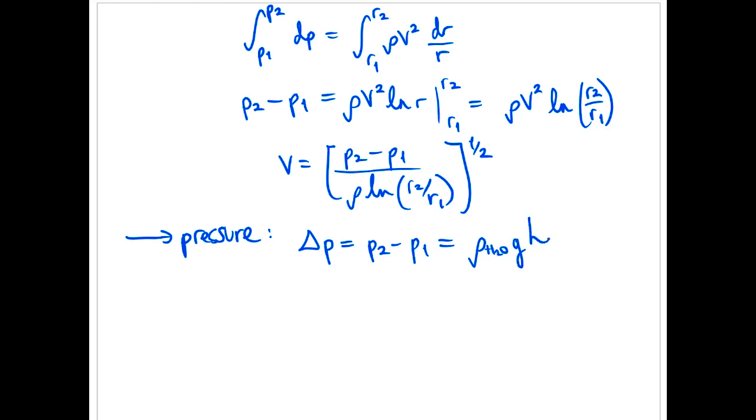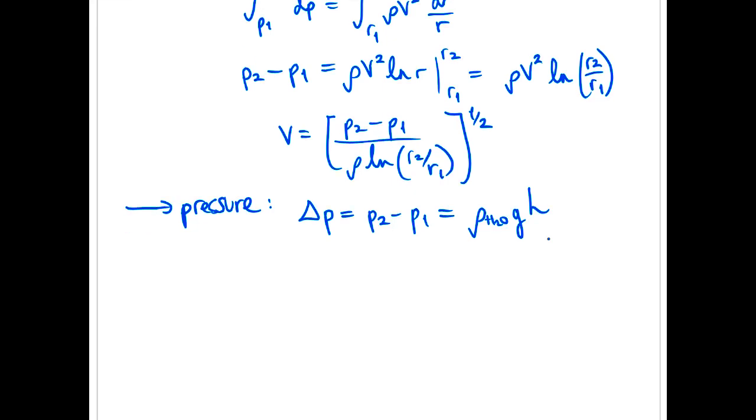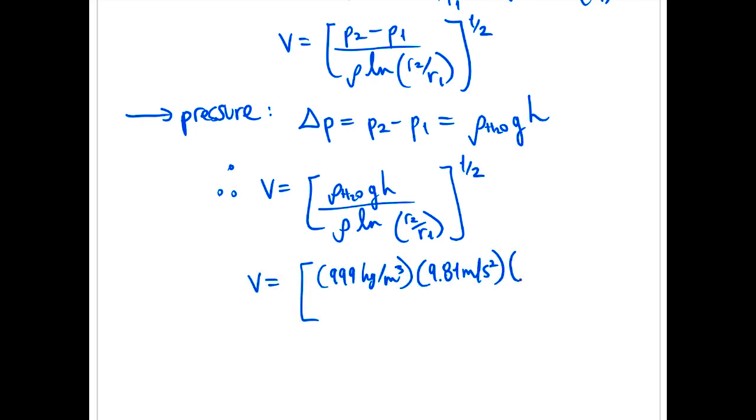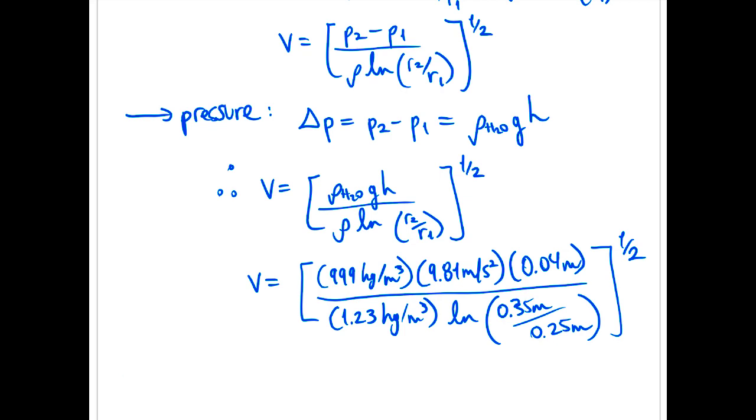Okay, so we just replace our P2 minus P1 there with the rho G H value that we're given. Therefore, we simplify like this and I'll go ahead and sub everything in here. All right, that's the velocity.